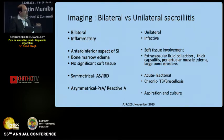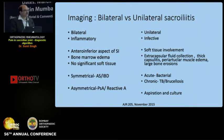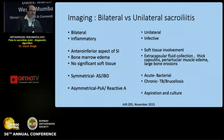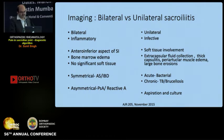On the inflammatory side, the antero-inferior aspect of the SI joints may be involved without significant soft tissue changes. If this is symmetrical, one considers ankylosing spondylitis or inflammatory bowel disease-associated sacroiliitis. If asymmetrical, psoriatic arthritis or reactive arthritis are more likely.